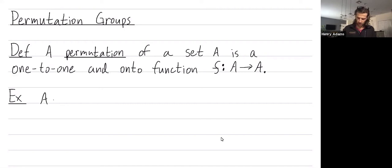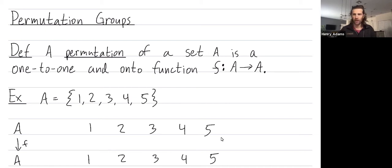So let's look at an example where A is the set of numbers 1, 2, 3, 4, and 5. So let's draw a permutation F from A to A. I'm going to write out the elements of A on the top row and then again on the bottom row. And we just need to map 1 through 5 to 1 through 5 so that every element goes to different places.